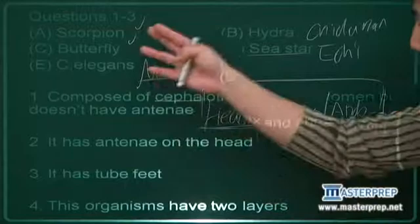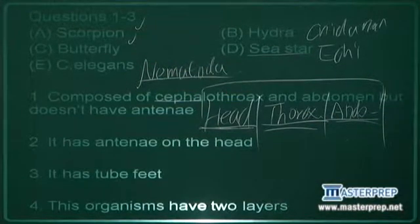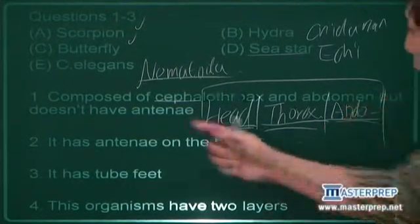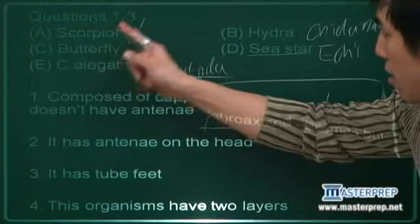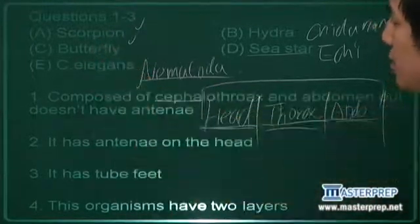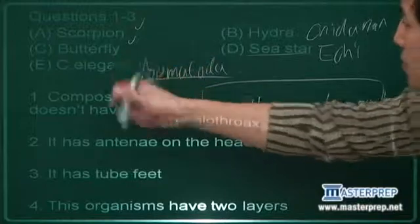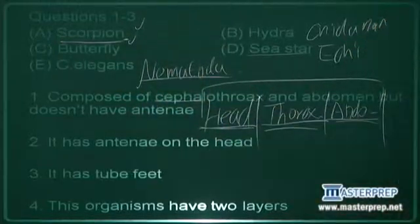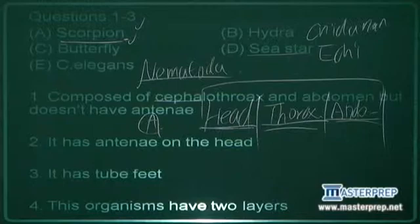So it's got to be either A or C for number one. But what does it say after this? But doesn't have antennae. Butterfly, obviously this is insecta, so it's got antennae. But scorpion, they don't. So A is the answer.